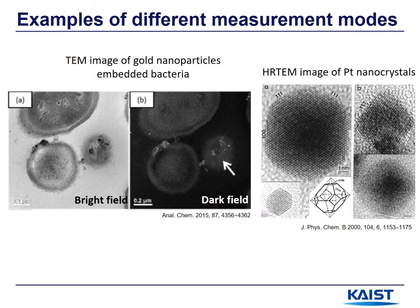Let's look at examples for different operation modes. On the left, you can see the TEM image of gold nanoparticles embedded in bacteria. In bright-field mode, both bacteria and gold nanoparticles appear dark, with gold nanoparticles slightly darker, making them hard to distinguish. However, in dark-field mode, you can clearly distinguish between nanoparticles and bacteria as nanoparticles appear much brighter. On the right, you can see HRTEM images of platinum nanoparticles where the 111 and 100 planes are directly shown in real space. You can also model the 3D structure of nanoparticles by integrating images with different tilting of the sample.